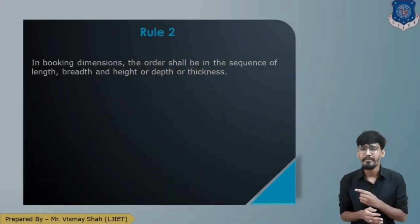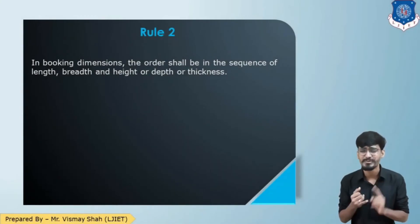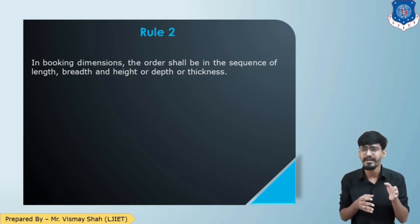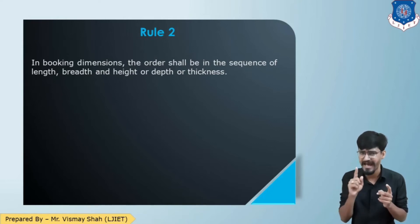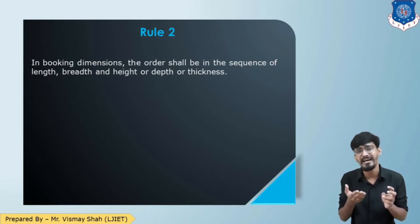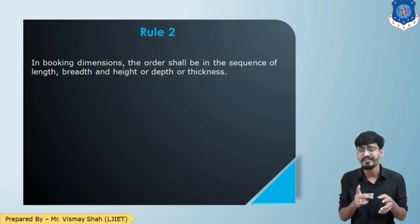Rule number 2 is one of the basic and important rules — you should remember this at all times. The order of booking dimensions is always: Length, Breadth, then Height or Depth or Thickness. Whenever you are preparing a measurement sheet, your order should be L, B, H. You cannot write H first, then L and B. Also, the units of all dimensions should be the same, because by multiplying L × B × H you calculate the quantity. If L is in meters and B is in feet, you cannot do the multiplication.